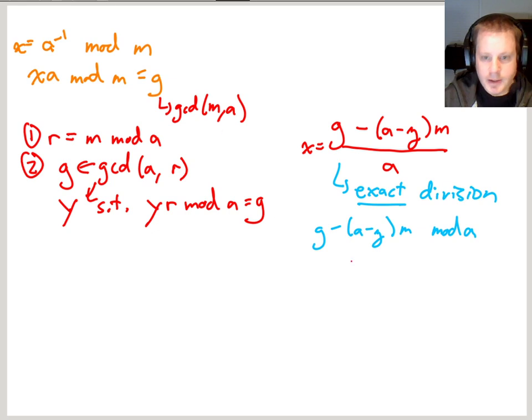A mod A is like saying 5 modulo 5. It's zero, right? Anything mod itself is zero. So that's just going to become zero. And M mod A, if you remember, we already computed M mod A is this first remainder R. So M mod A is equal to R.